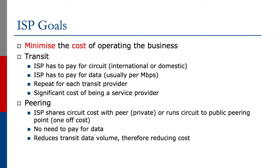Let's have a look at a network operator's goal. Network operators want to minimize the cost of operating their business — it's only natural. If you're a commercial ISP, the more it costs to operate the business, the more expensive it is for an end user. For an academic and research network operator, similar applies: the more costs for operating the network infrastructure, the more cost it is for the universities, research institutions, or funding entities.